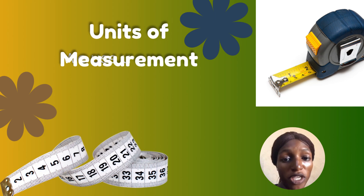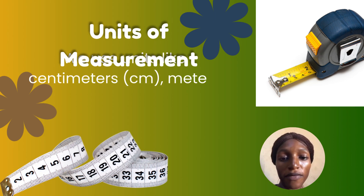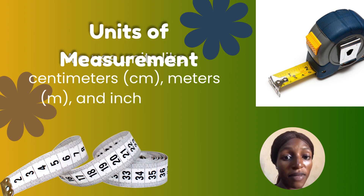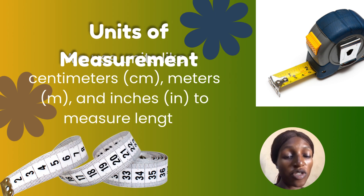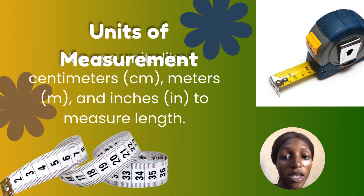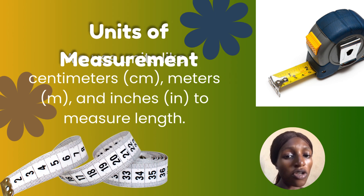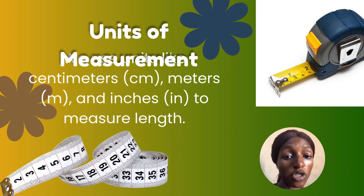The unit of measurement we use to measure length — we use units like centimeter. Look at your ruler. You will see an edge where CM is written, starting from zero. That is centimeter. We also have meter and inches. On the other side of your ruler, you will see I-N-C-H, which is also used to measure length.